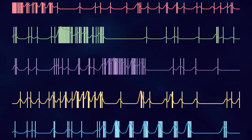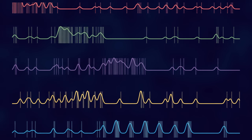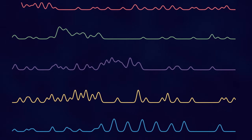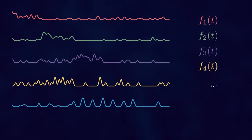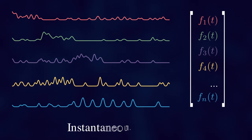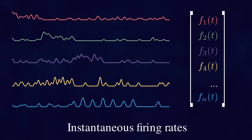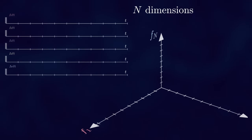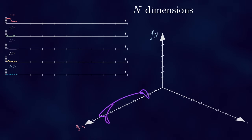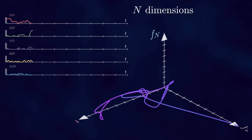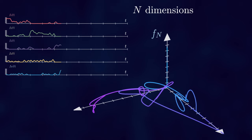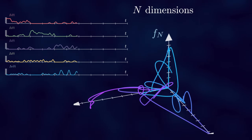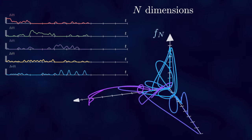We usually smooth the data to get a nice continuous variation instead of discrete jumps. Thus, if we have n neurons in our recording, then at each point in time, the activity of this population is characterized by n numbers, each one representing the instantaneous firing rate of the corresponding neuron. Those n numbers form an n-dimensional vector, which corresponds to a point in n-dimensional space. As time passes and the animal is foraging or performing some task, the pattern of activity changes — some neurons increase their firing rates while others fire more sparsely — and this point traces some trajectory.